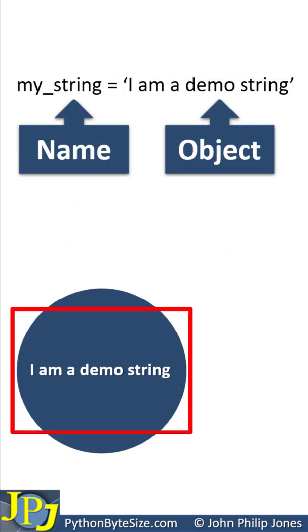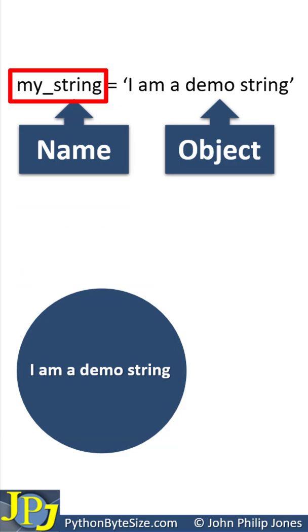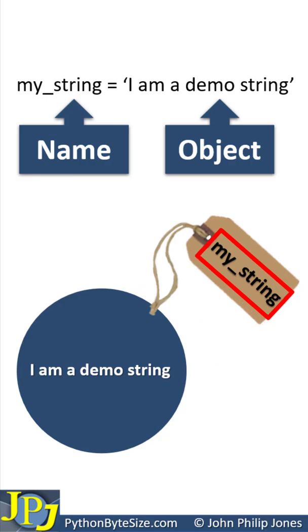Now, we have to reference this object with the name. And of course, this is the name here, my_string. So I can show that with the label appearing here, which you can see has got my_string.